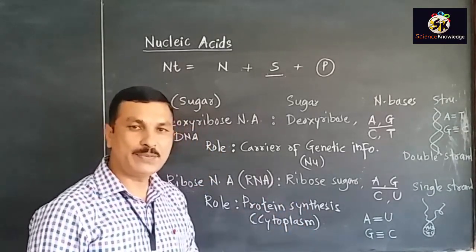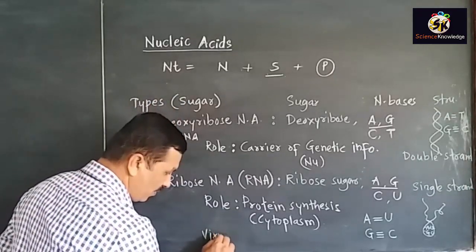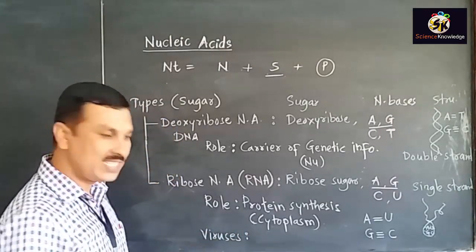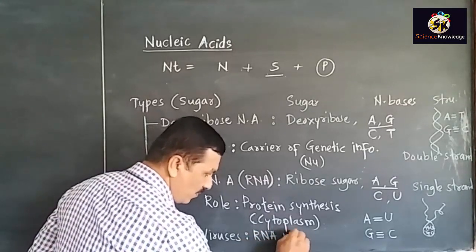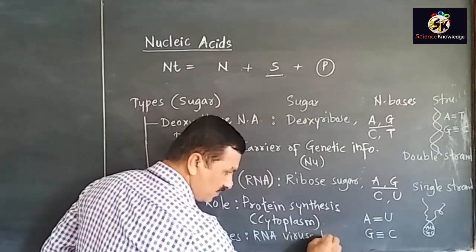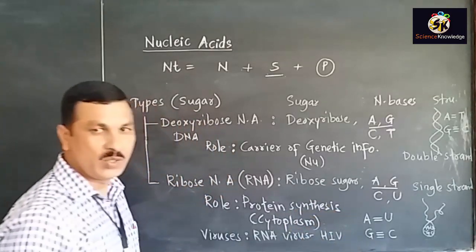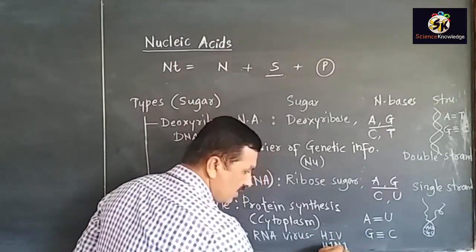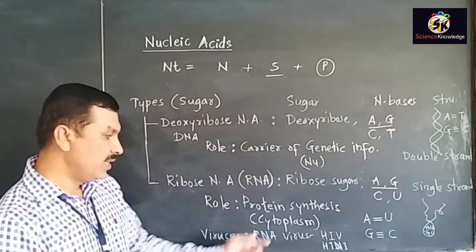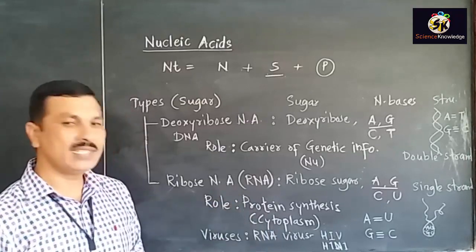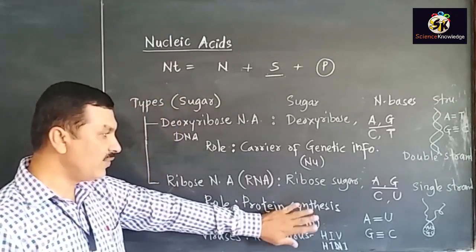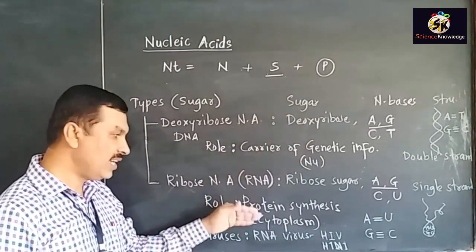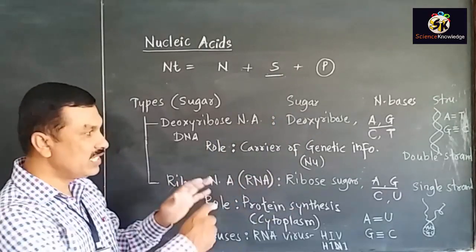But there are a few exceptions. There are certain viruses which carry RNA as a genetic material, and such viruses are called RNA viruses — for example, HIV which causes AIDS, and H1N1 which is the swine flu virus. So with the exception of these RNA viruses, all other living organisms will have DNA as a genetic material and RNA as the protein-synthesizing machinery.